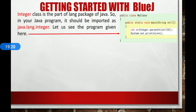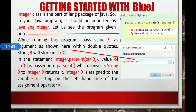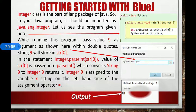Let us see the program given here. While running this program, pass the value 9 as an argument as shown, within double quotes. String 9 will be stored in str[0]. In the statement Integer.parseInt(str[0]), the value of str[0], that is 9, is passed into parseInt, which converts string 9 to integer 9 and returns it. Integer 9 is assigned to the variable x on the left hand side of the assignment operator. Finally, the print statement is displaying 9 multiplied by 9, that is 81, as output.